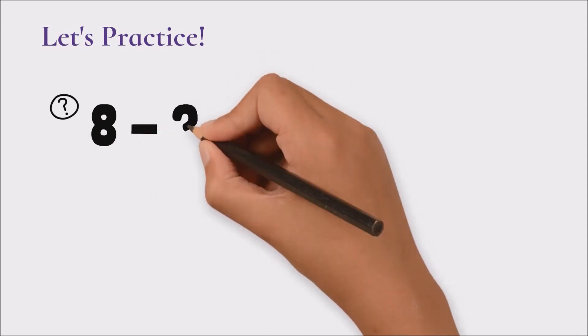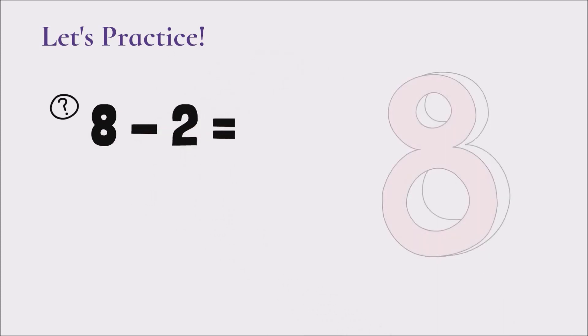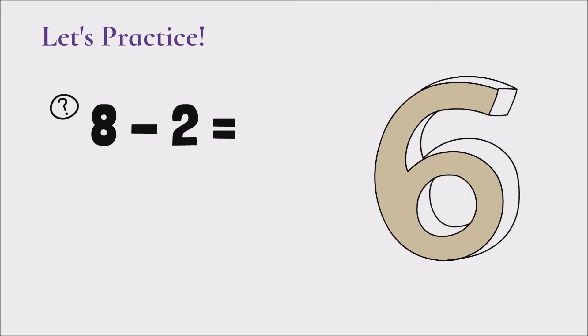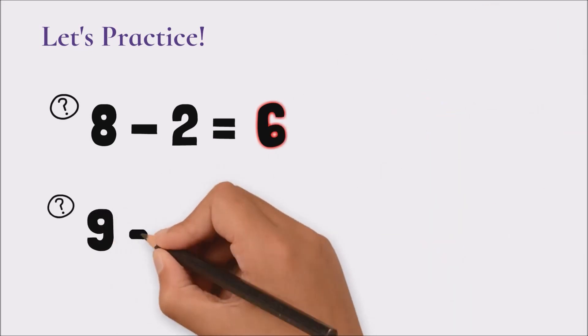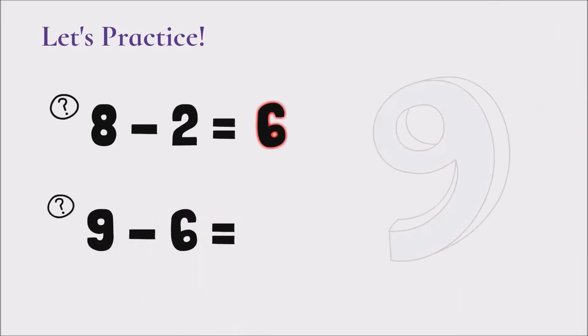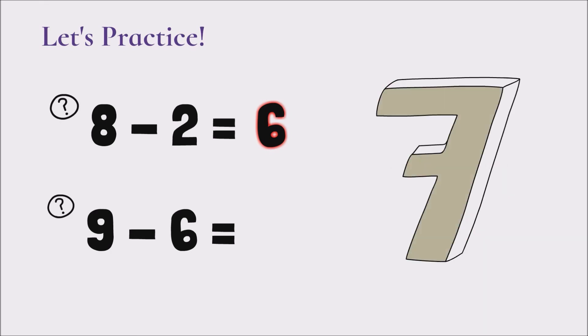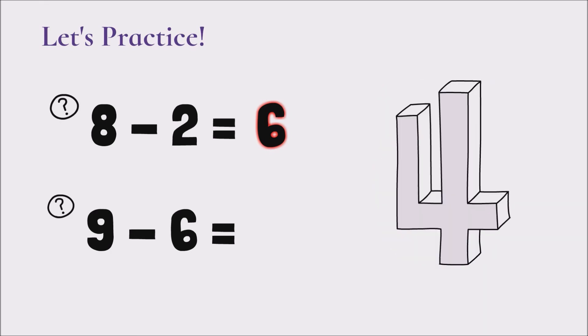Let's try two more examples. Number one: eight minus two. We start at eight and we count down two steps from eight. So from eight it would be seven, six for a result of six. How about the difference between nine and six? We start at nine and we would count down six steps. So from nine it would be eight, seven, six, five, four, three for a result of three.